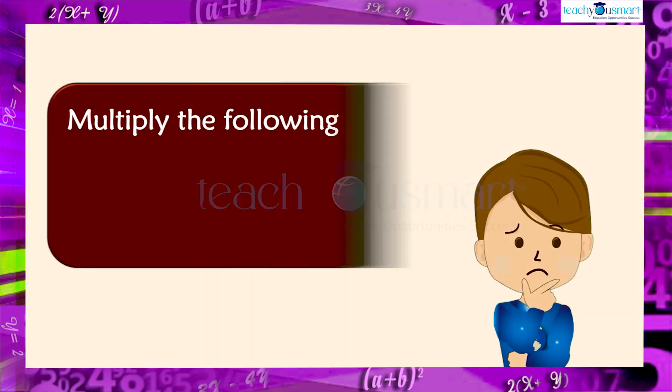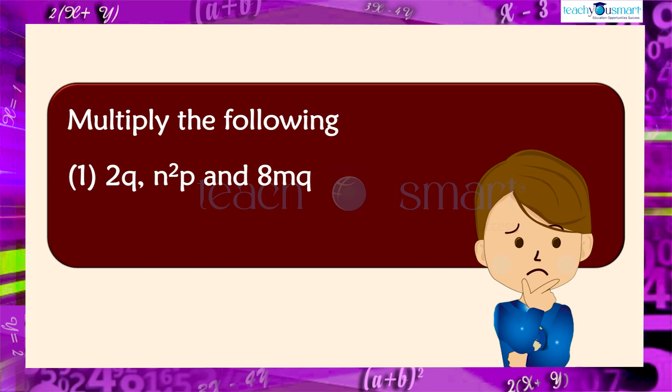Multiply the following. First one is 2Q, N square P and 8MQ. Second, 4P cube and minus 4P.